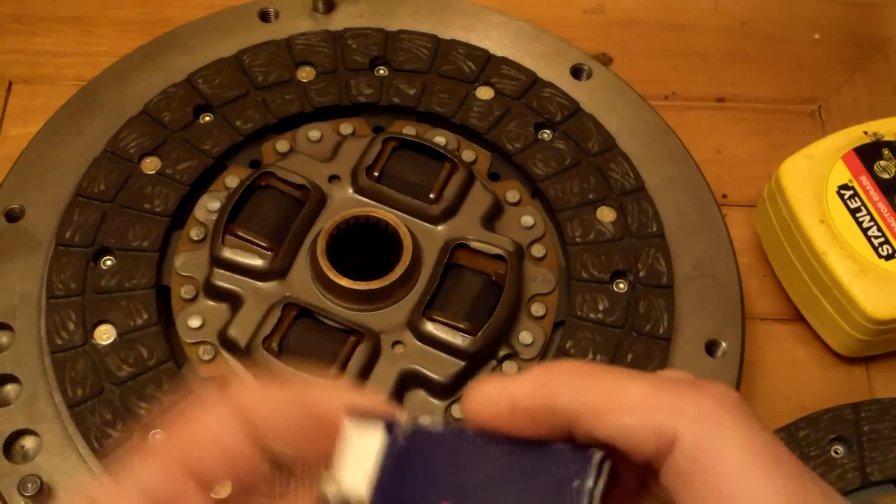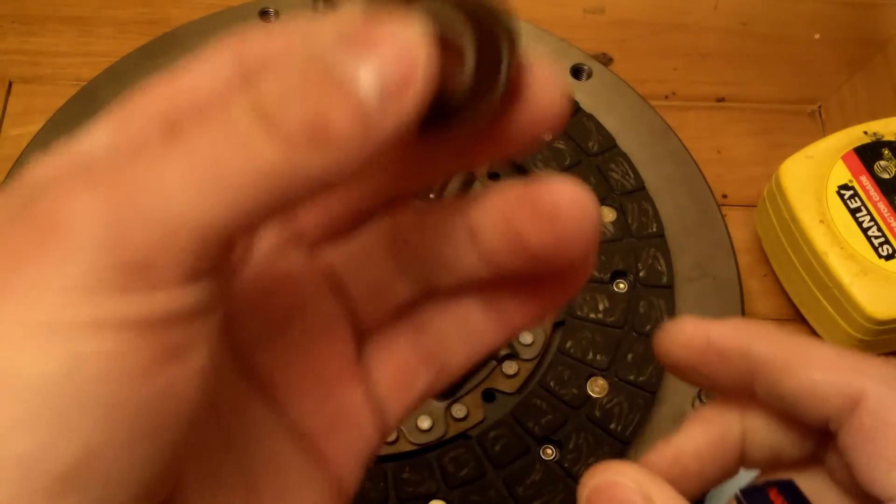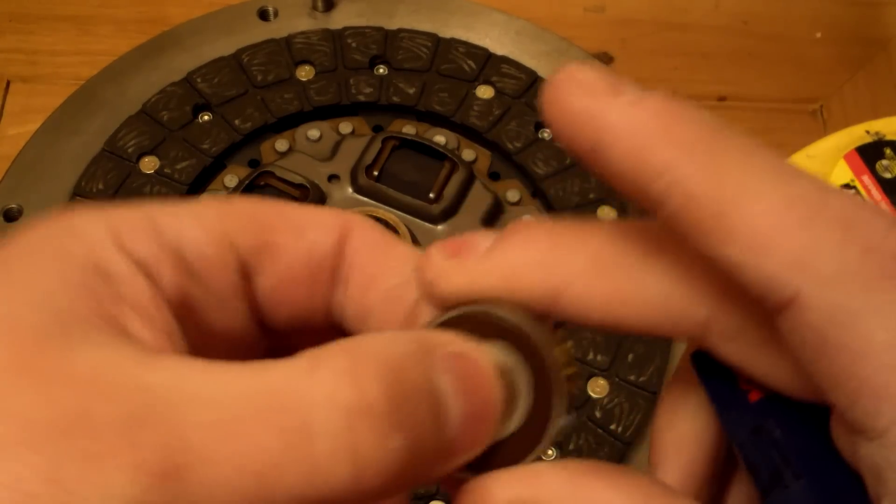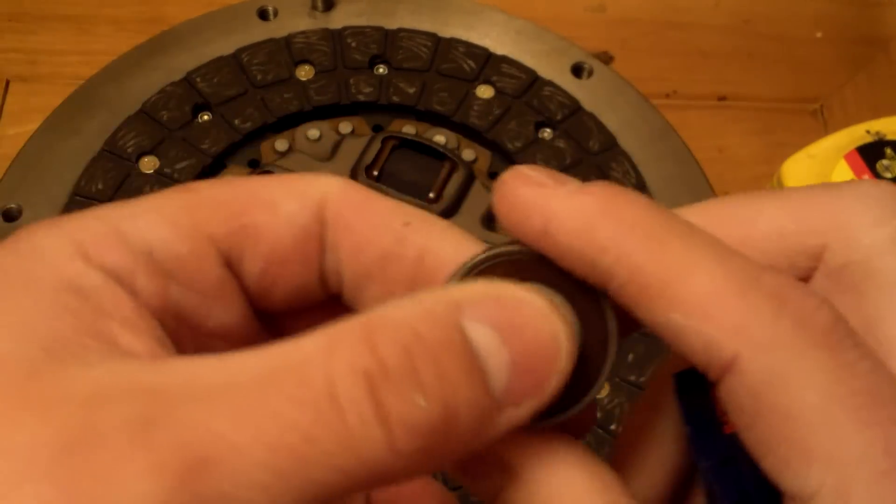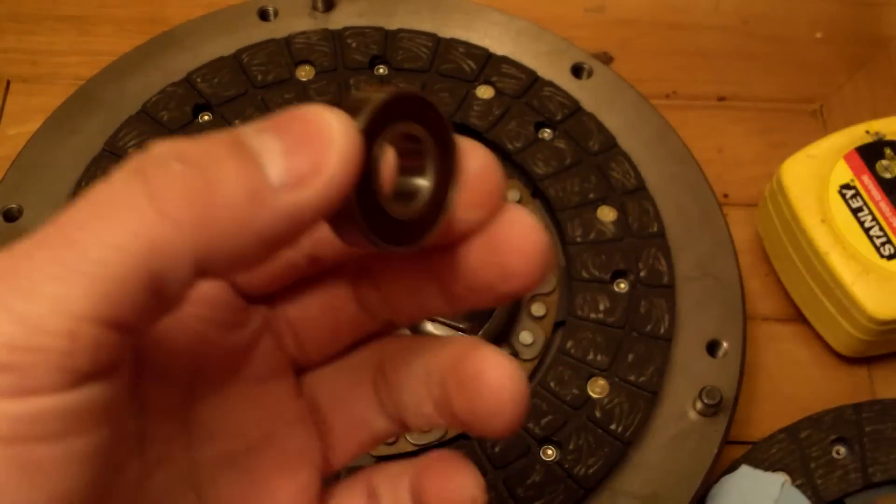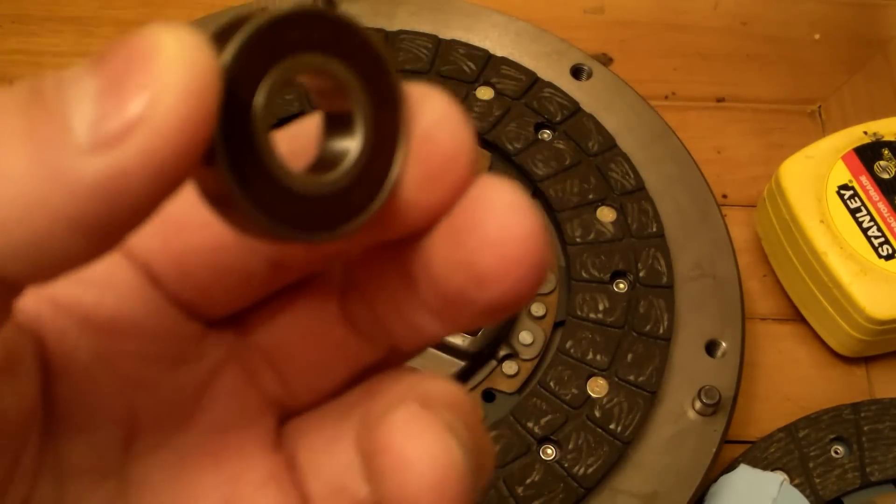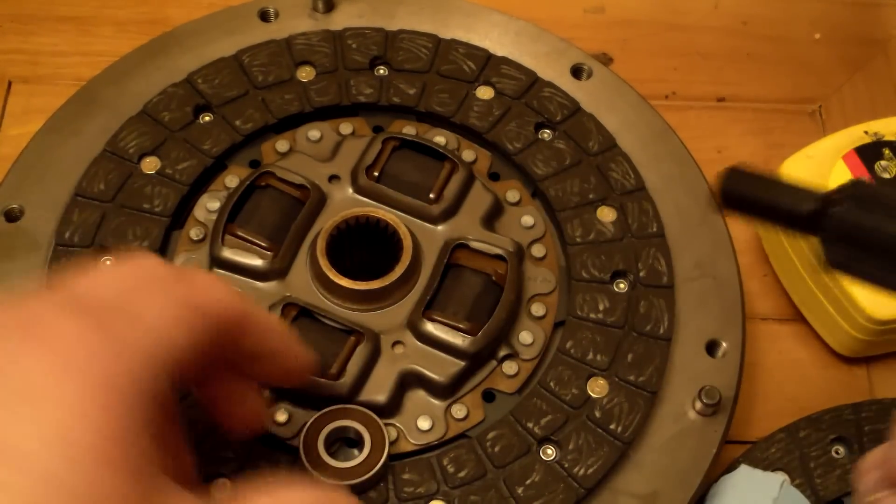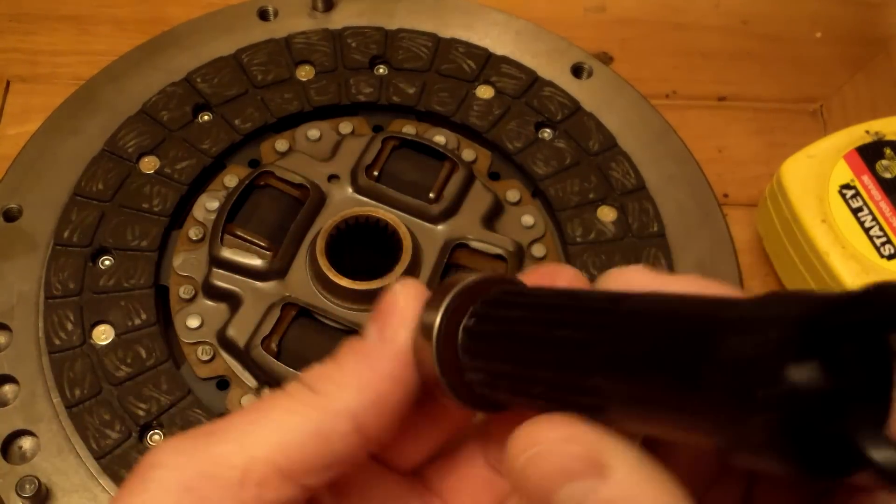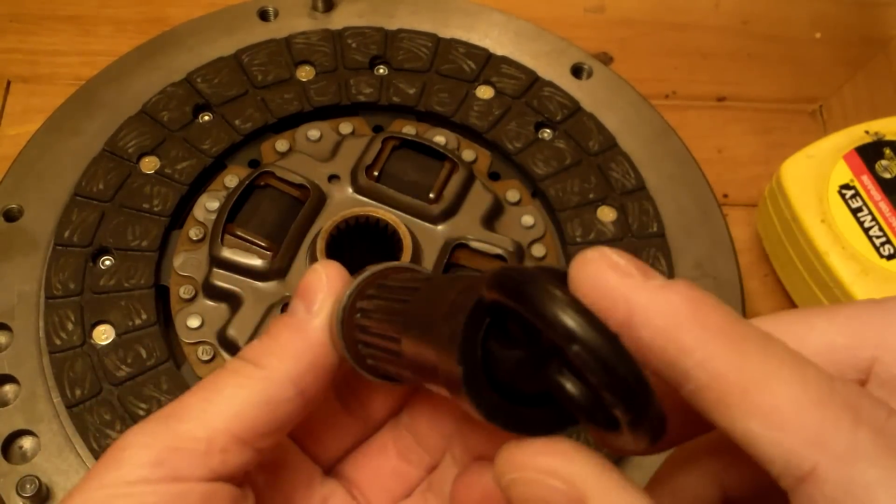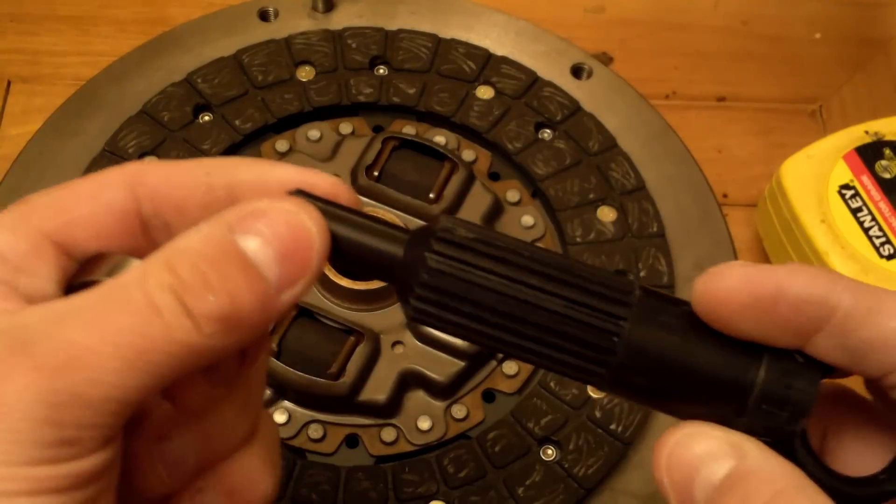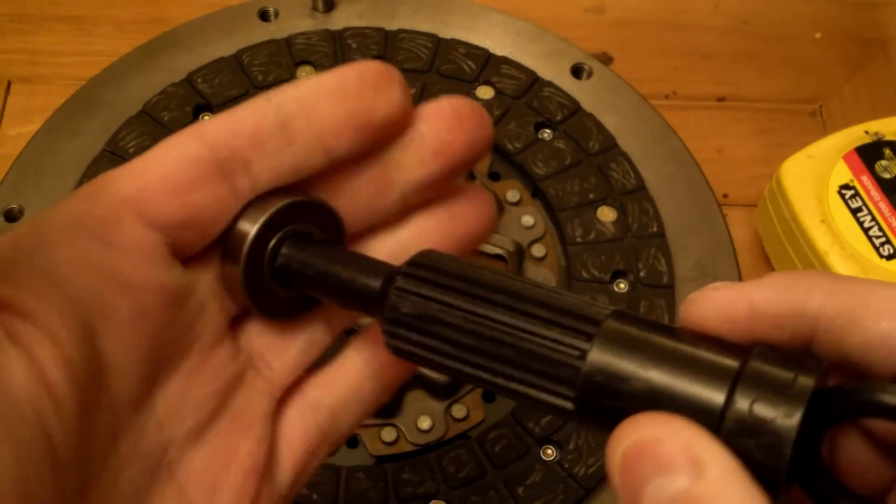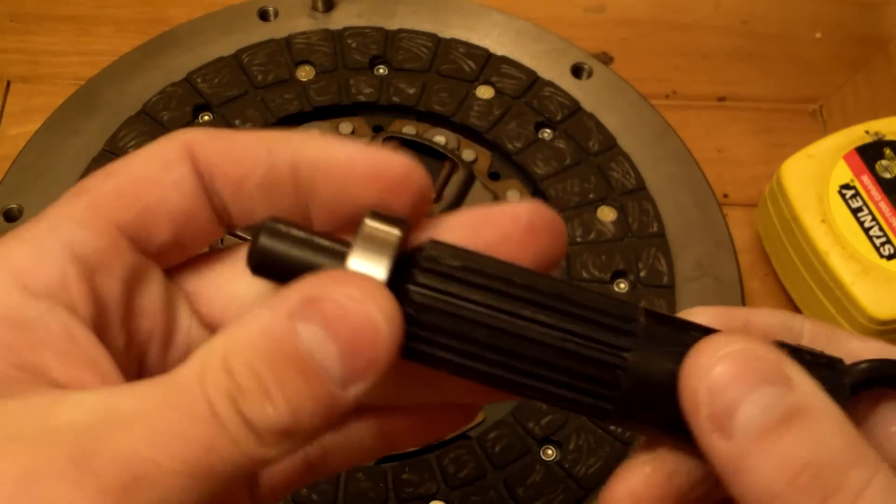One other item. When you do a clutch job, also change this. This is called a needle bearing. This is a bearing that goes in dead center of your crankshaft. And that's why it's there. The tip of your transmission goes right in there when you put it on.